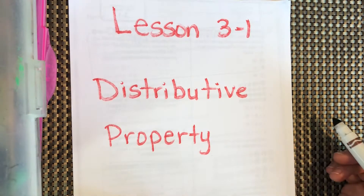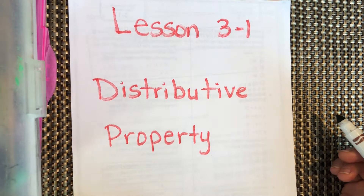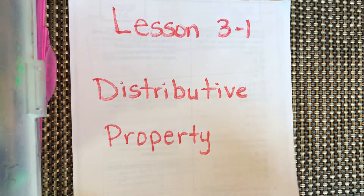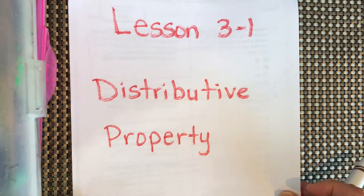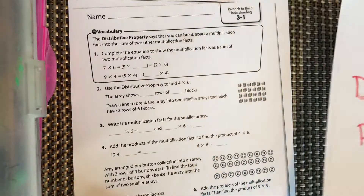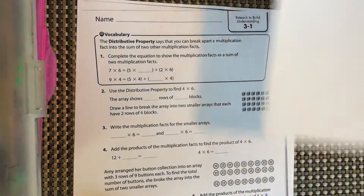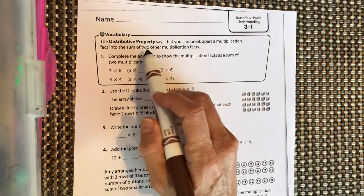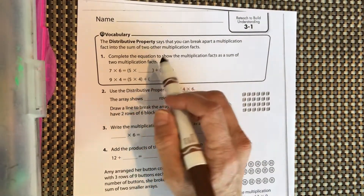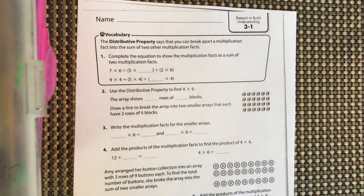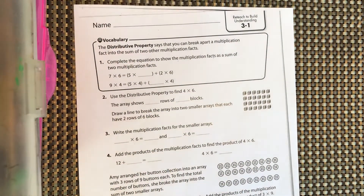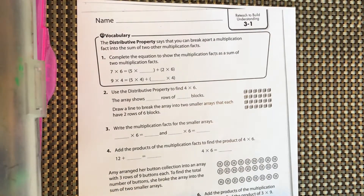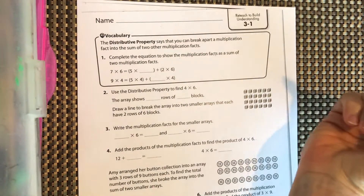We're going to do lesson 3-1, the distributive property of multiplication. Let's take a look at our worksheet. The distributive property says that we can break apart a multiplication fact into the sum of two other multiplication facts.